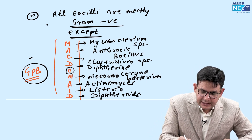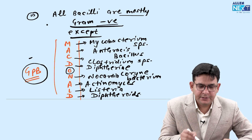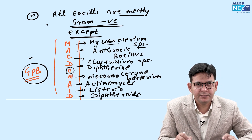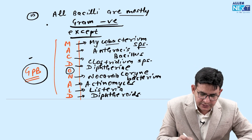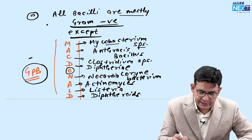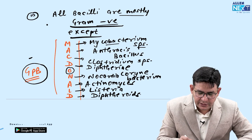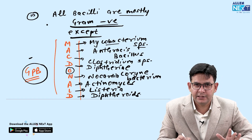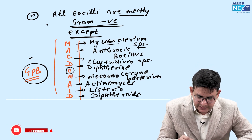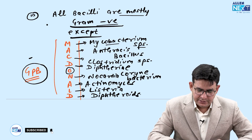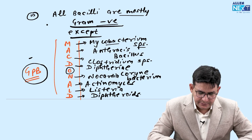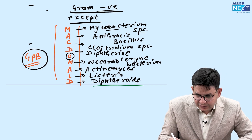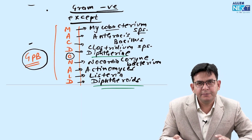Let's revise: all bacilli are mostly gram-negative except MCD. M is Mycobacterium species — primarily acid-fast. A is Bacillus anthracis. C is Clostridium. D is Diphtheria. O is nothing. N is Nocardia. A is Actinomyces or Actinomycetes — both are the same. L is Listeria. D is Diphtheroids.